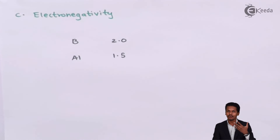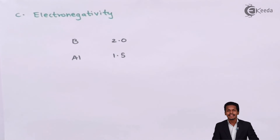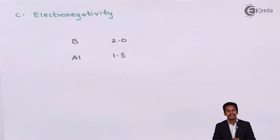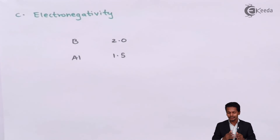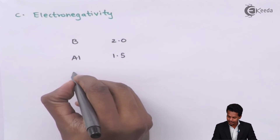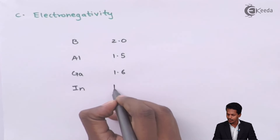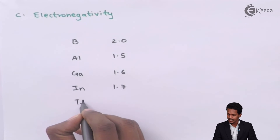Since Boron has a smaller size, the nucleus has more attraction towards its outermost electron, and thereby it also has the tendency to attract other electrons — giving it high electronegativity. For Aluminium it is 1.5, but for Gallium it has been found to be 1.6, for Indium 1.7, and for Thallium 1.8.